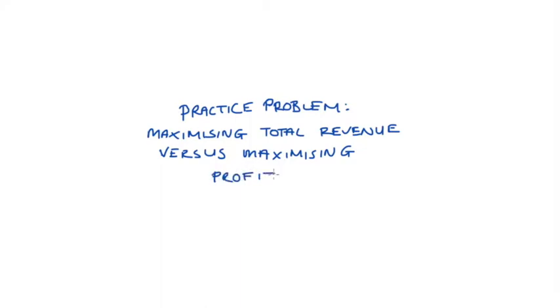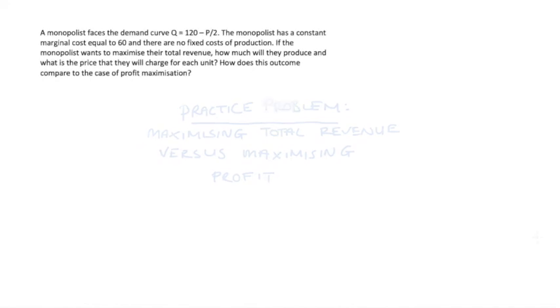Hi everyone. In this practice problem I'm going to explore the maximization of total revenue and compare this to the outcome where the firm maximizes profit. Our question is: a monopolist faces the demand curve Q is equal to 120 minus P over 2. The monopolist has a constant marginal cost equal to 60 and there are no fixed costs of production. If the monopolist maximizes their total revenue, how much will they produce and what is the price they will charge? How does this outcome compare to profit maximization?